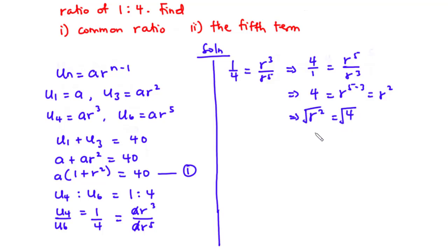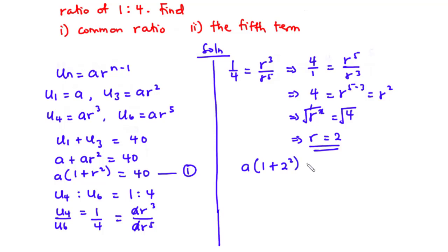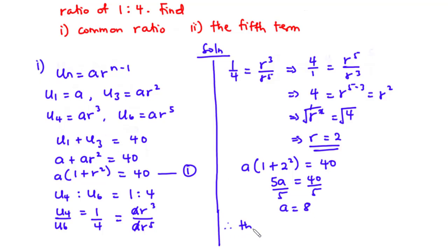Now substituting r = 2 into equation 1: a(1 + 2^2) = 40, so a(1 + 4) = 40, giving 5a = 40. Dividing by 5, a = 8. Therefore, the common ratio is 2.